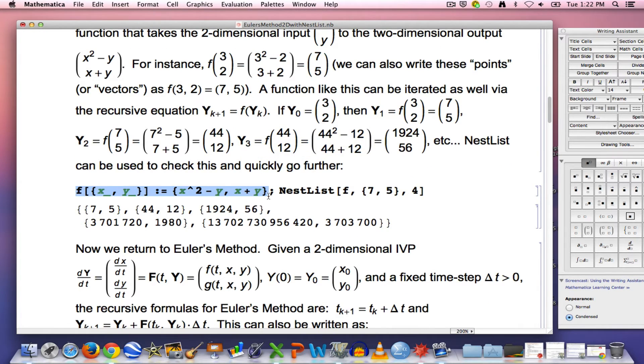And nest list can implement this. Notice I'm typing this function in with a two-dimensional input and a two-dimensional output, and nest list does it. It iterates the function and gives you those two-dimensional outputs based on this function, this initial condition, and this number of iterations.